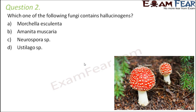Question number two: which one of the following fungi contains hallucinogens? The options are Marshella esculenta, Amanita muscaria, Neurospora species, and Ustilago species. Our first option, Marshella esculenta, is the most readily recognized edible mushroom, also known as the sponge morel or the morel mushroom.